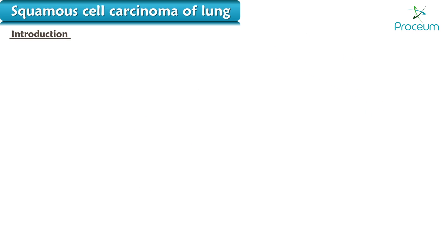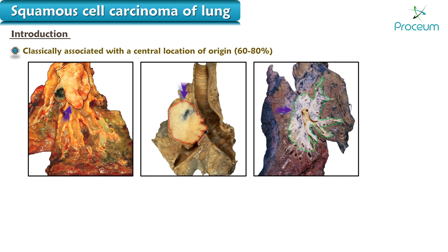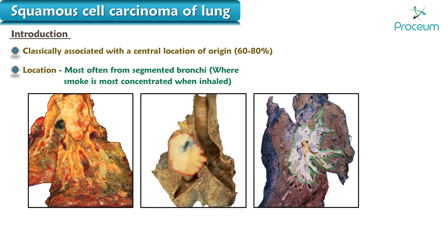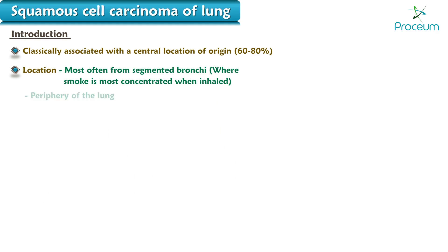Squamous cell carcinoma is classically associated with a central location of origin, arising most often from the segmented bronchi where smoke is most concentrated when inhaled. However, squamous cell carcinoma of the lung can also be seen in the periphery of the lung.